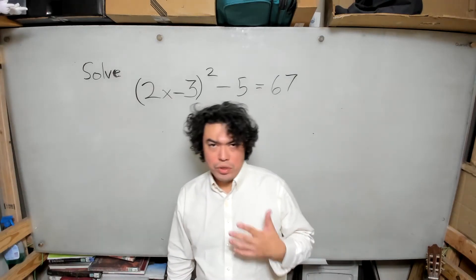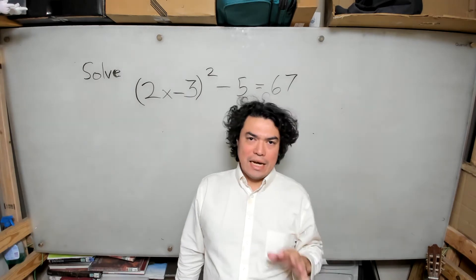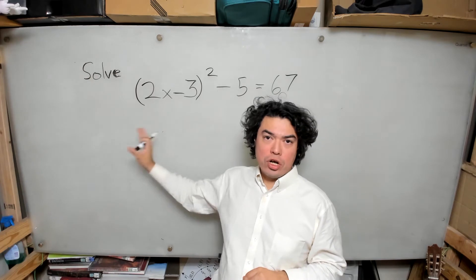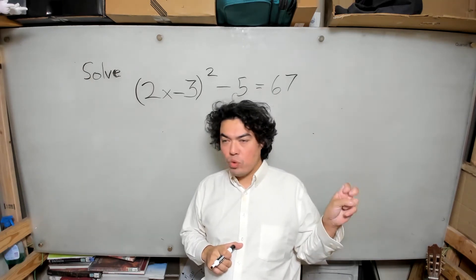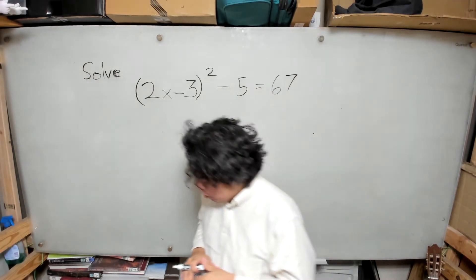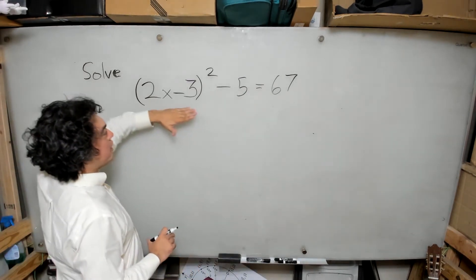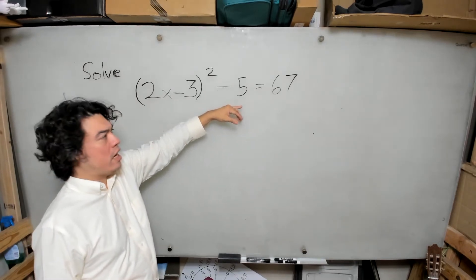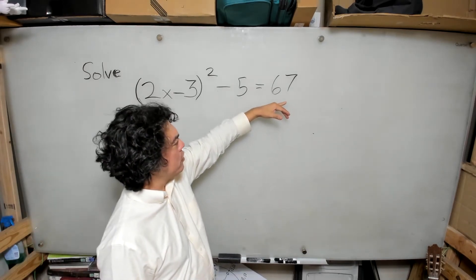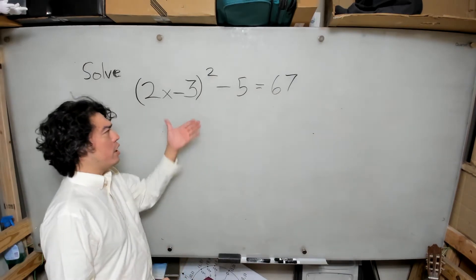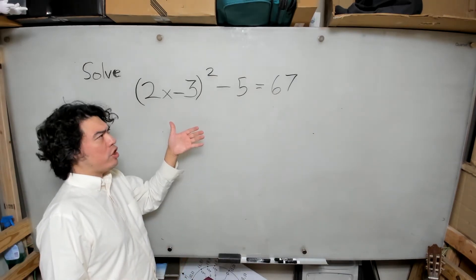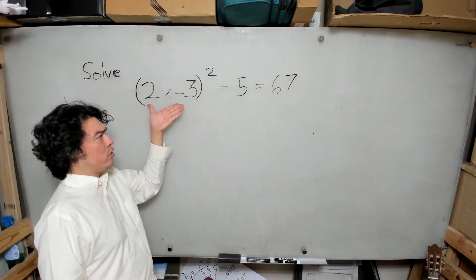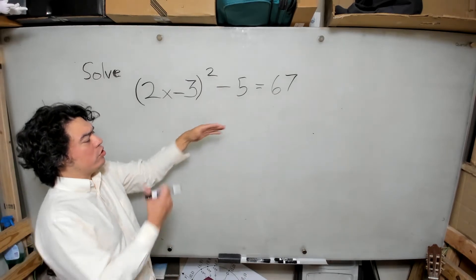Hello again. We're going to solve this slightly more complicated quadratic — another one that will be solved by taking square roots. In this case, we have a square term with a minus 5, and it equals some number. The strategy for solving this type of quadratic is to get the square term by itself, so we need to deal with that minus 5.